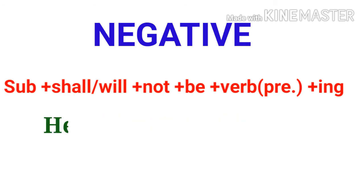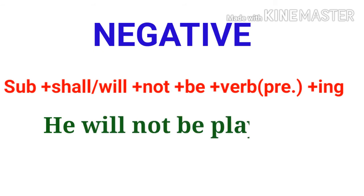Breaking down the negative example: 'He' is the subject, 'will' is the auxiliary verb, 'not' is the negation, 'be' follows, and the main verb 'play' becomes 'playing.' Full sentence: He will not be playing.